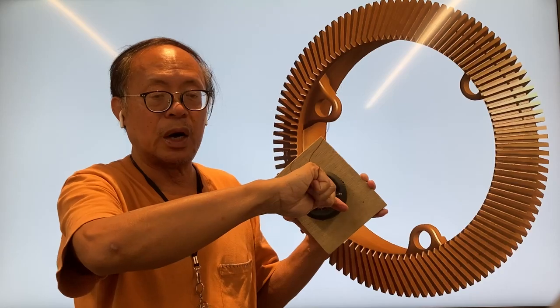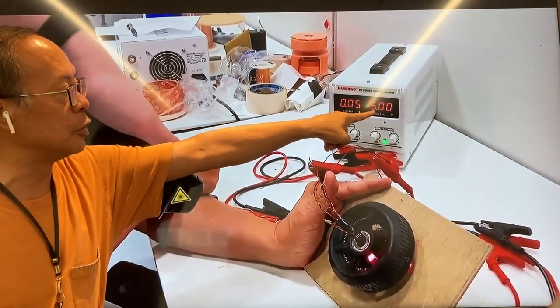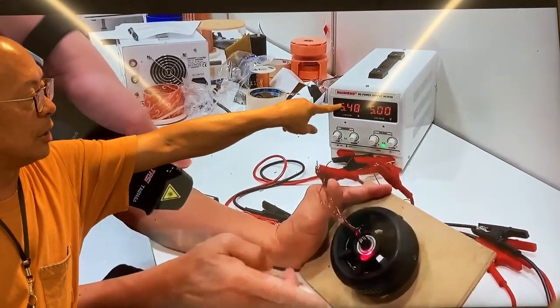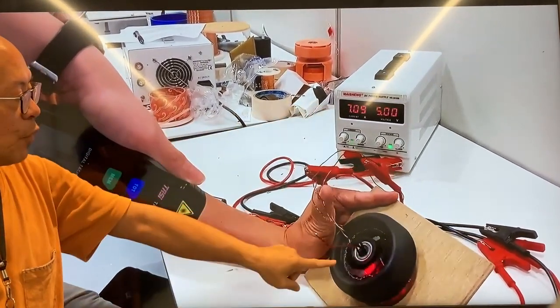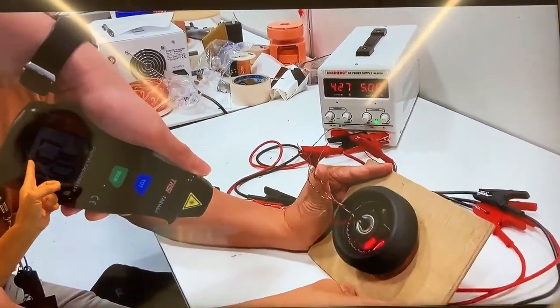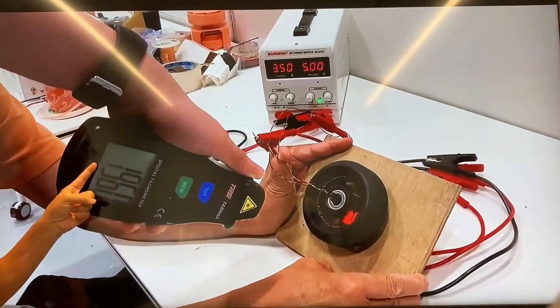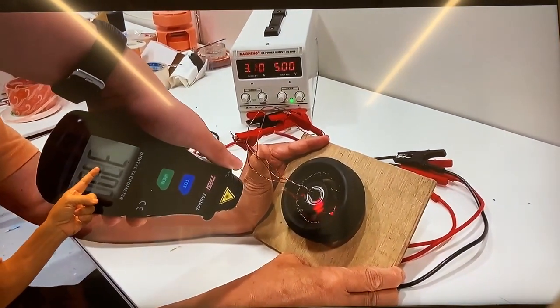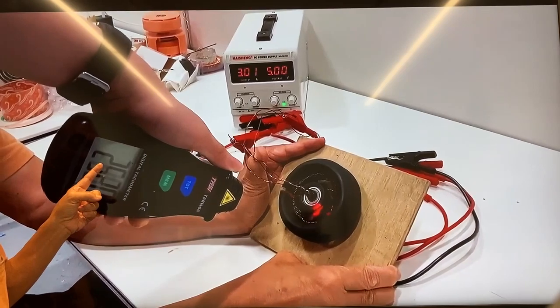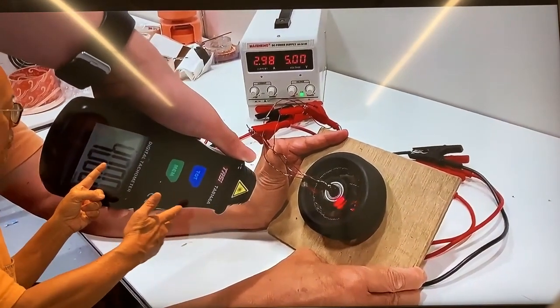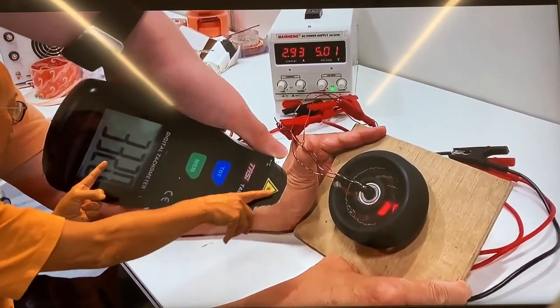Here are phase A, phase B, and phase C wires. We set the voltage at 5 volts. Once it started turning, you can read the RPM here. It's about 3,000, fluctuating, but it stabilized at around 4,000.